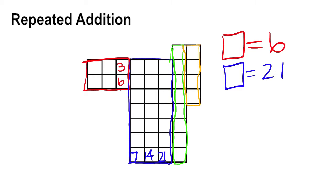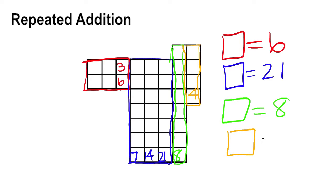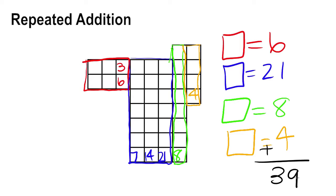I can see that the green rectangle is one square bigger than the blue rectangle, so its area must be 8. The area of the orange rectangle is 4. When I add the areas of the smaller rectangles together, I get the total area of the rectilinear figure. The area is 39.